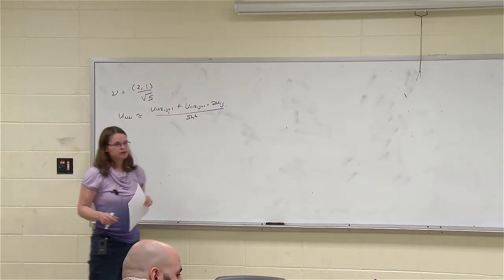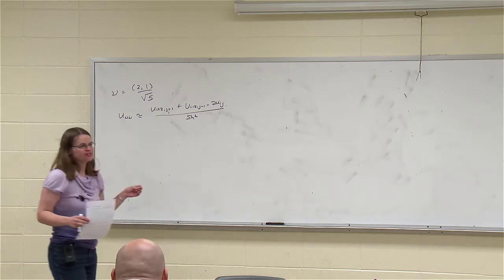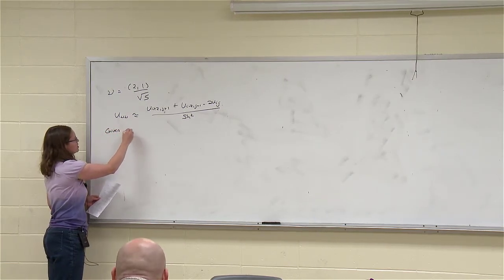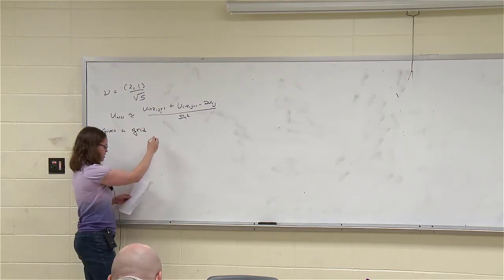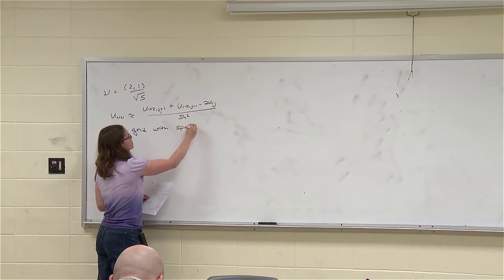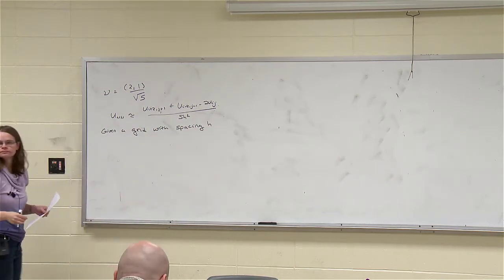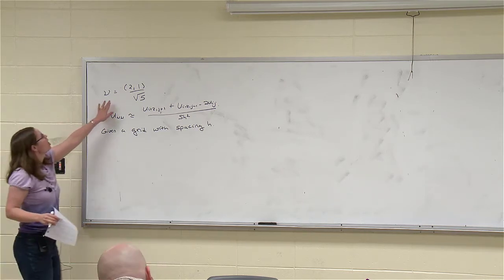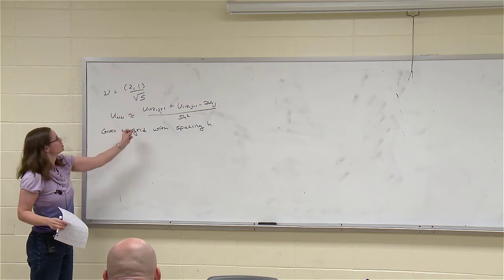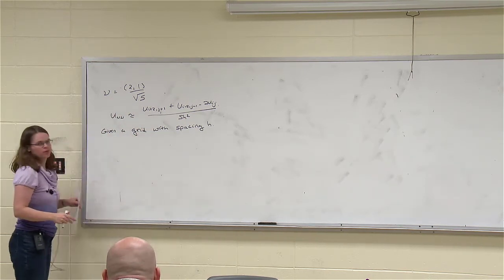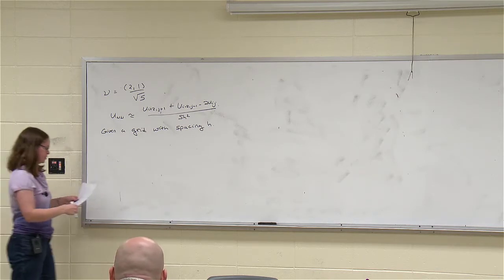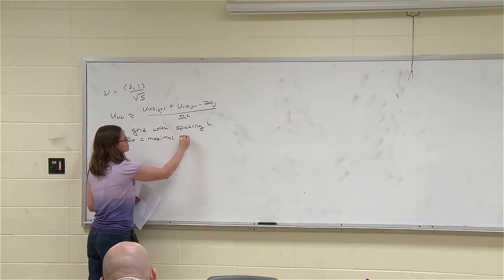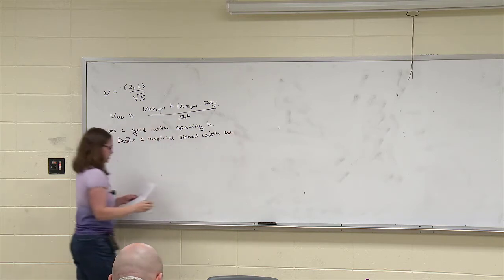We need to adjust our usual idea of consistency. Say we're given a finite difference grid with spacing h. We're going to make use of the idea that maybe we don't just want to look at nearest neighbors — maybe we're willing to look a little farther away. Here we went two grid points out. I'm going to define how far out I'm willing to look and call that w. Let's define maximal stencil width w, meaning I'm willing to look that far away.